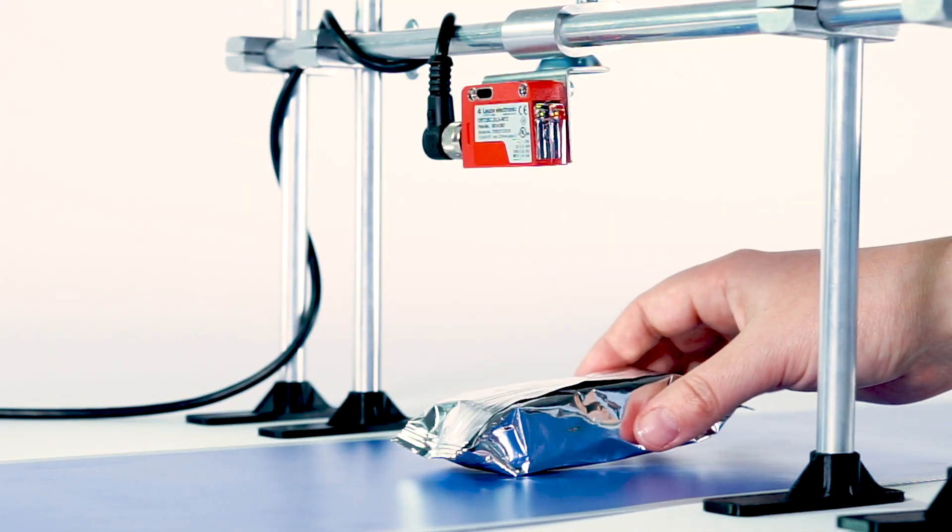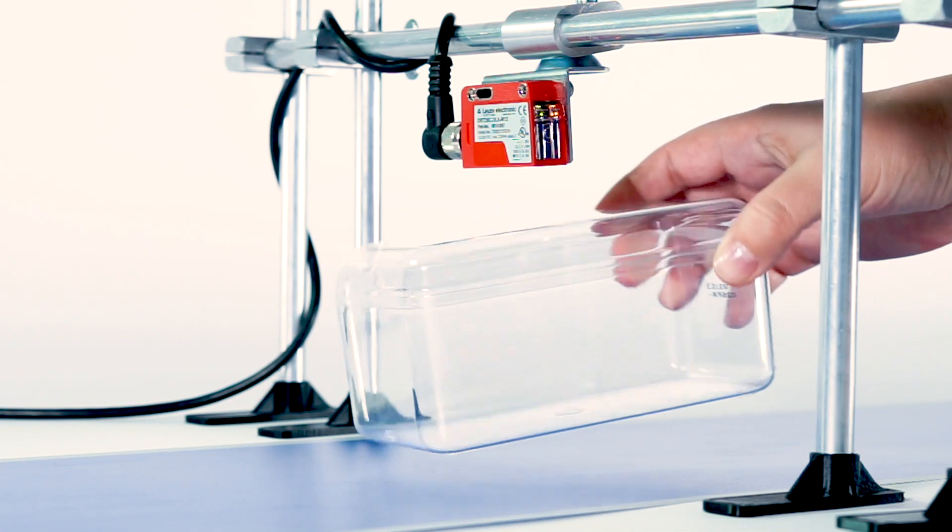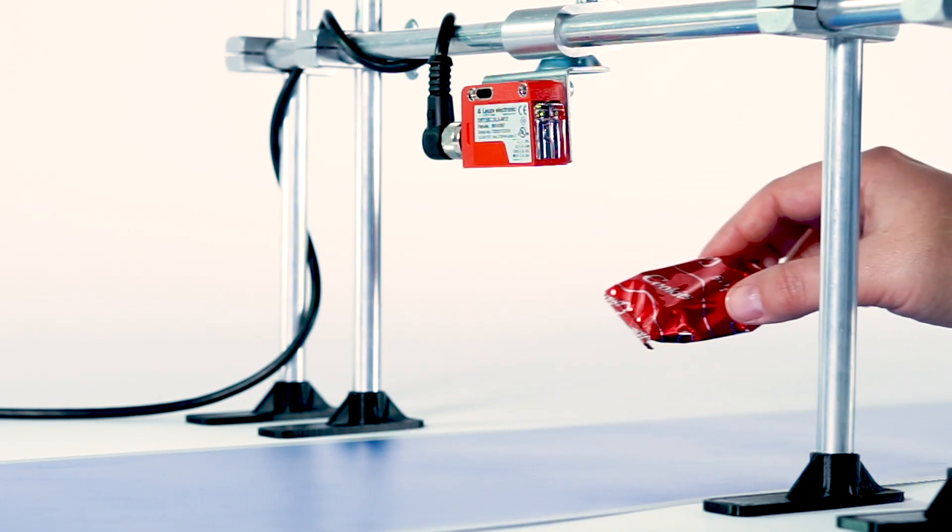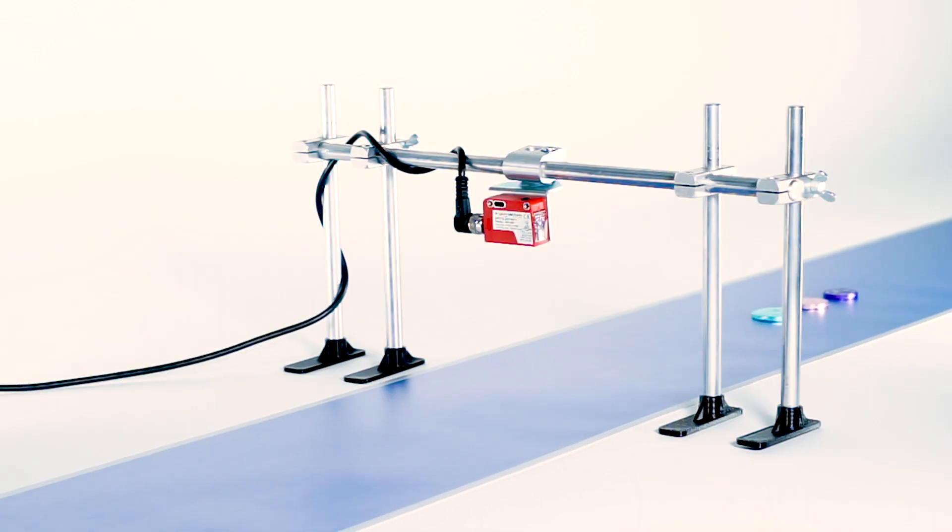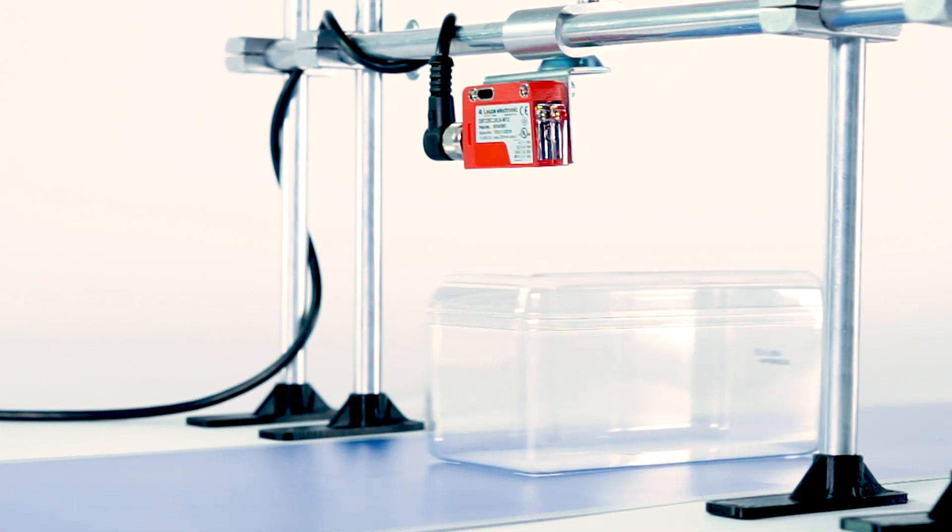Even glossy objects, different types of packaging, and irregular shapes are no problem for the Reference Diffuse Sensor, as it is designed especially for these applications. It is also able to compensate for vibrations of the conveyor belt without problem.